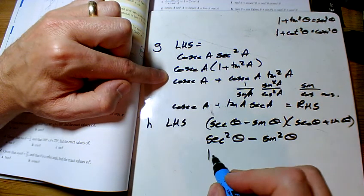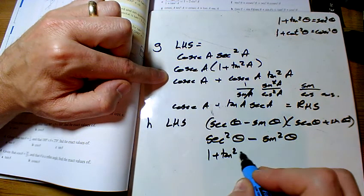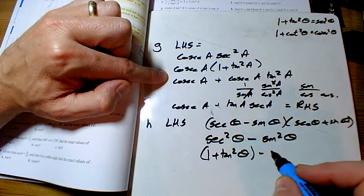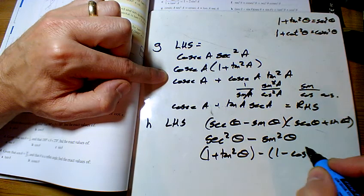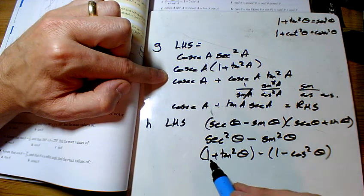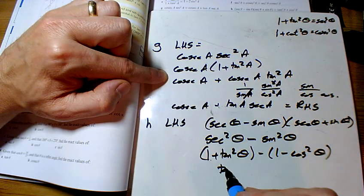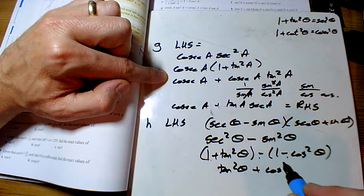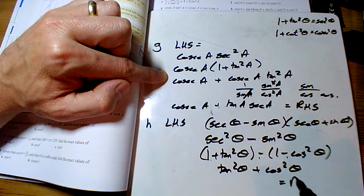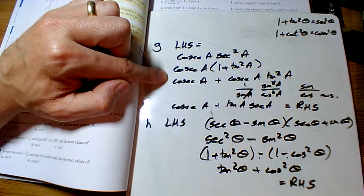Sec is 1 plus tan squared, and sine is 1 minus cos squared. 1 minus 1 will cancel out, so I've got tan squared theta minus minus, so plus cos squared theta. And that is the right-hand side.